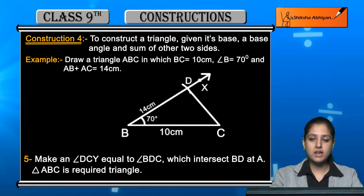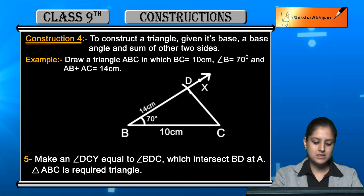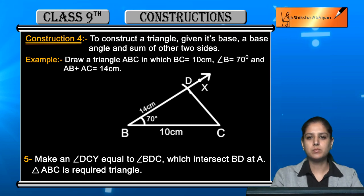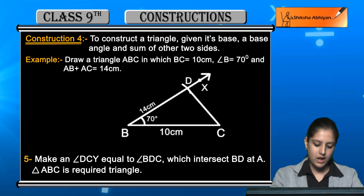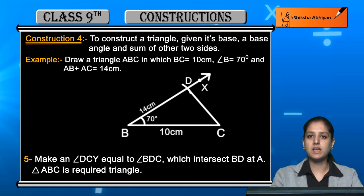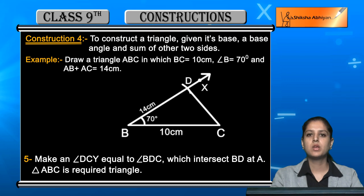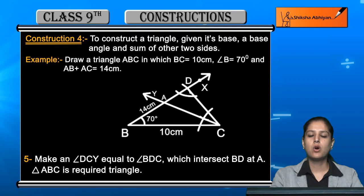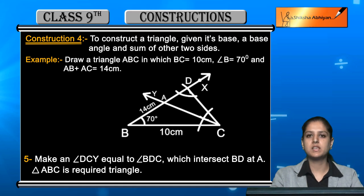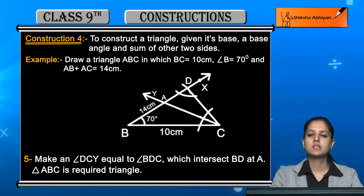The next step is to make an angle DCY which is equal to angle BDC, and which intersects the line BD at point A. Take the measurement of angle BDC with a compass and draw angle DCY with the same measurement from point C. The ray from C intersects line BD at point A. Join A to C. Triangle ABC is the required triangle.